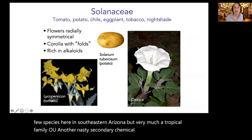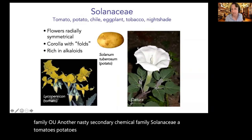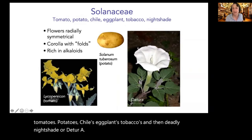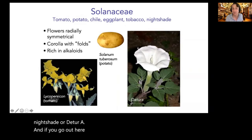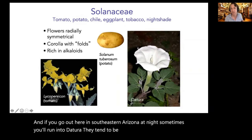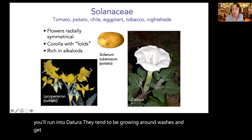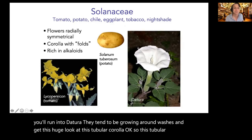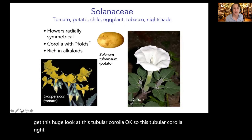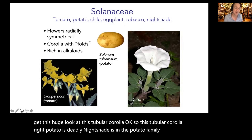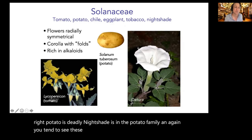Solanaceae — tomatoes, potatoes, chilies, eggplants, tobaccos, and deadly nightshade or Datura. In Southeastern Arizona at night you might run into Datura growing around washes, with these huge tubular corollas — a very clear example of the asterid fused tubular corolla. Deadly nightshade is in the potato family. You tend to see these fused corollas, often with lobes, very typical of the Solanaceae.